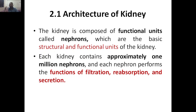Each kidney contains approximately 1 million nephrons. That means with two kidneys, there are 2 million nephrons in one human being. Every nephron performs three functions: filtration, reabsorption, and secretion. These are the three major functions done by the kidney. The kidney acts as a filtration system, but along with filtration, it also does reabsorption of certain hormones and electrolytes, and secretion.